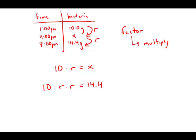In other words, we start with 10 and multiply by r twice to get to 14.4. So this is 10 r squared equals 14.4.